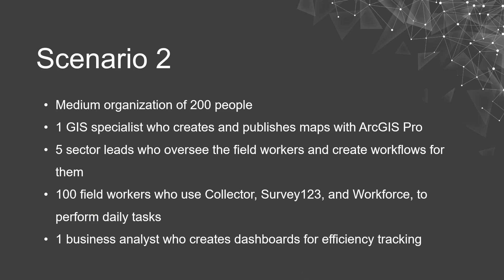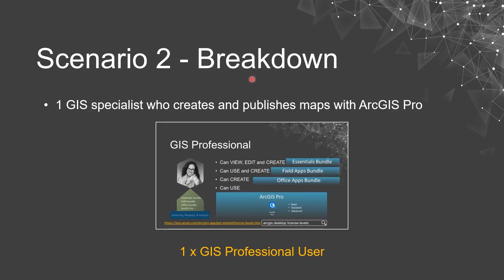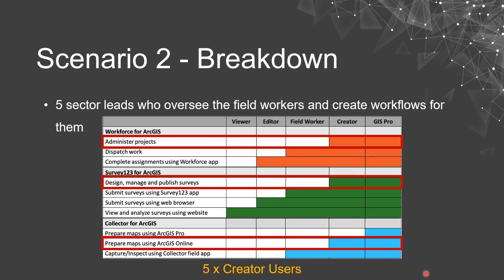The GIS specialist needs to create and publish maps with ArcGIS Pro, so we'll grant that person a GIS professional user type. The sector leads need to oversee field workers and create workflows — they need administrator access to Workforce, Survey123, and Collector. Administering Workforce projects, designing and publishing Survey123 surveys, and preparing maps for use with Collector all require a creator or GIS professional user type. So we'll add five creator user types for our five sector leads.